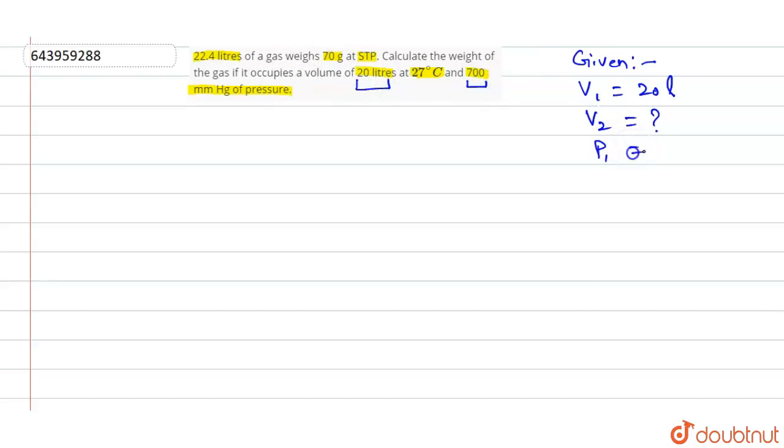And what is P2? P2 is said to be at STP. What is P2 at STP? It is 760 mm.